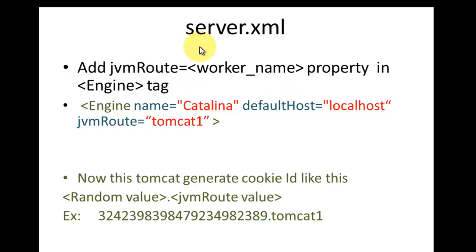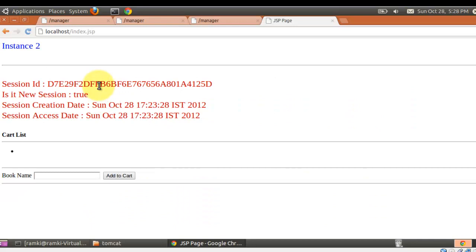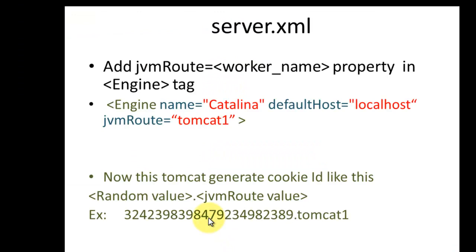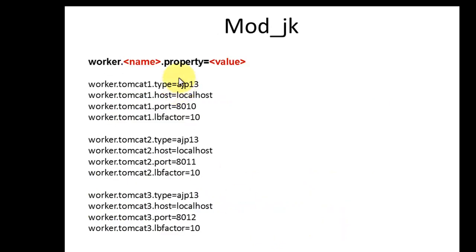There is a property called jvmRoute. We need to add it into the server.xml file in the Engine element. The engine is Catalina — here we need to add jvmRoute equal to the worker name, for example tomcat1. The worker name you give here must match the worker name mentioned in the mod_jk workers.properties file. Once you mention jvmRoute, the session ID is no longer just a random number — the worker name is appended to it, like random-number.tomcat1. In mod_jk, this worker name is already known, so based on the worker name, all further requests are forwarded to that particular Tomcat.